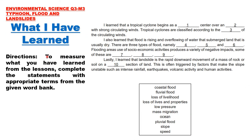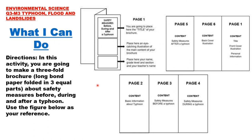What I Have Learned: Complete the statements with appropriate terms from the given word bank. What I Can Do: Make a three-fold brochure using long bond paper, folded into three equal parts, about safety measures before, during, and after a typhoon.